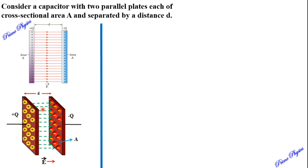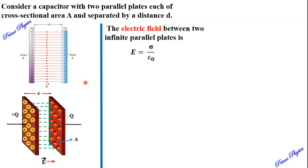Now for the derivation — there are two identical metal plates. One plate has plus Q charge and the other plate has minus Q charge. They are separated by a small distance D. Now we should derive the electric field formula. In between the two plates, the electric field formula is E is equal to sigma by epsilon naught, where sigma is the surface charge density and epsilon naught is the permittivity of free space. Sigma is equal to Q by A.